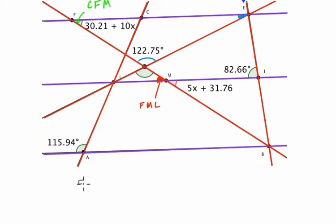Set the two expressions equal to each other. 5x plus 31.76. Set it equal to 30.21 plus 10x. Once the equation is set up, we can begin to balance it and solve for x. So I'm going to subtract 5x from both sides. This brings my x's to the same side.